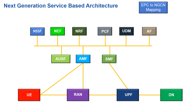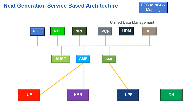Moving across, we have the Policy Control Function, which is very much like the PCRF found in the Evolved Packet Core. It is used to prioritize different types of traffic within the network — whether video, voice, or data. The UDM, the Unified Data Management, provides a very important security function: all key management is performed within the UDM, making it a critical component for security within the network.